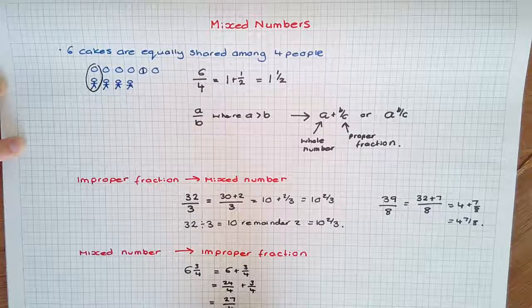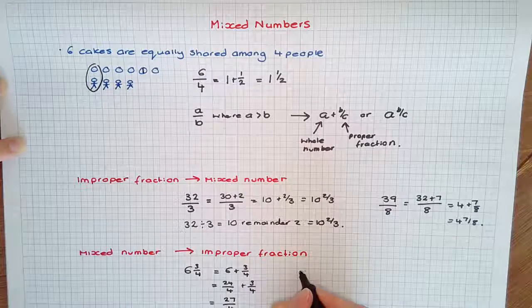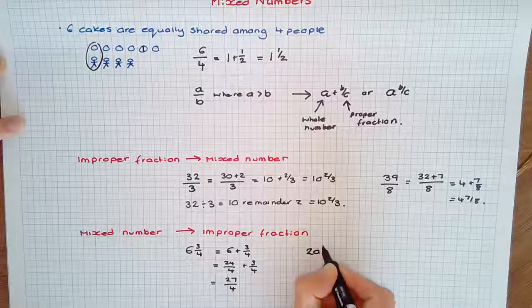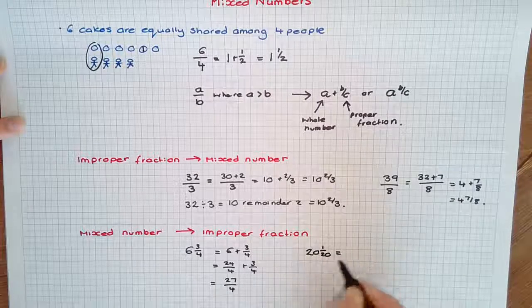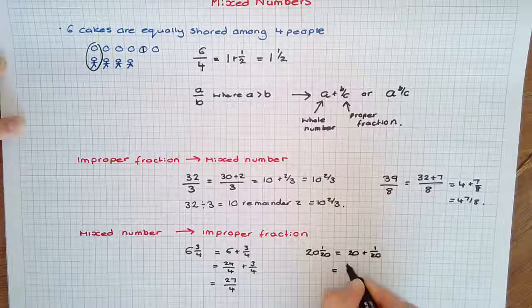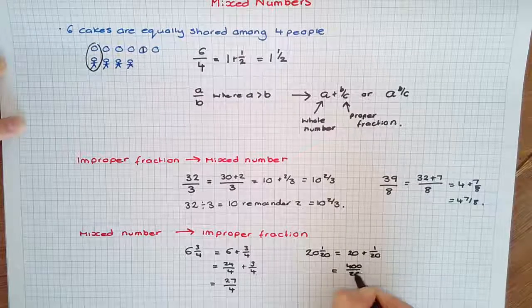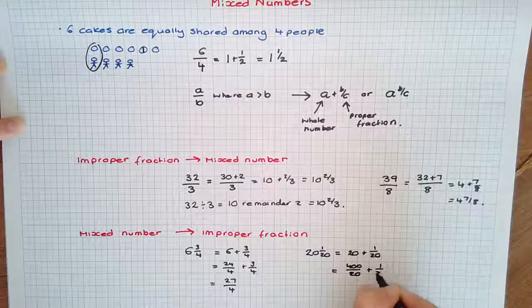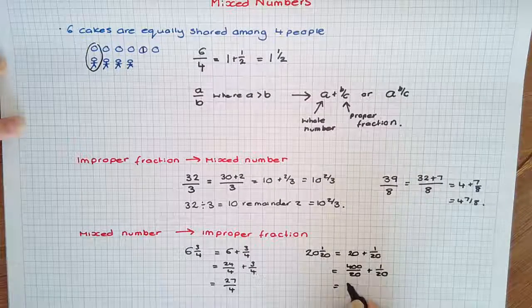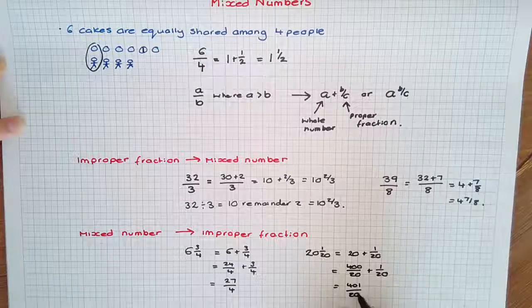Another example: 20 and 1/20. We're going to express the 20 as a fraction over 20, that would be 400/20, which gives us 20. Plus the 1/20, we have 400/20 plus 1/20, which is 401/20.